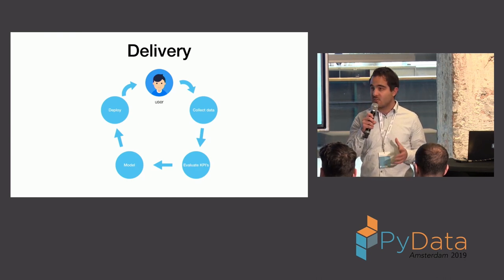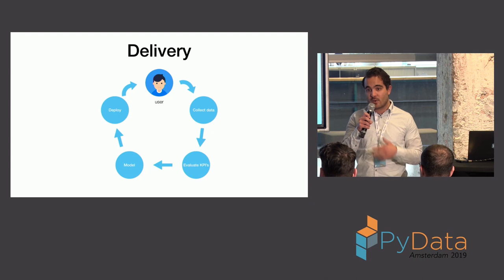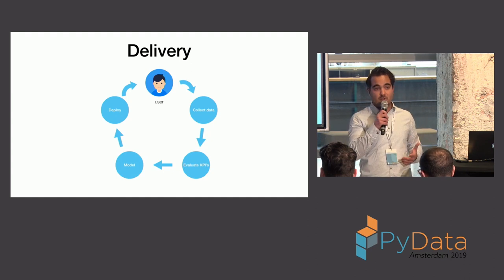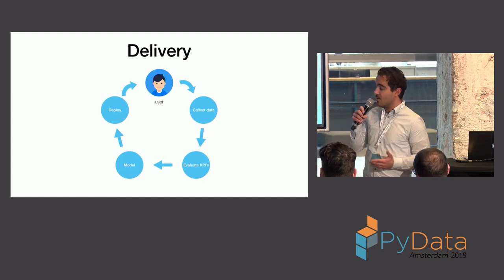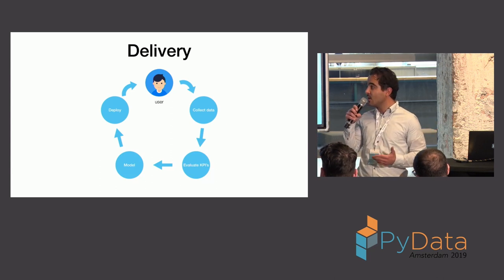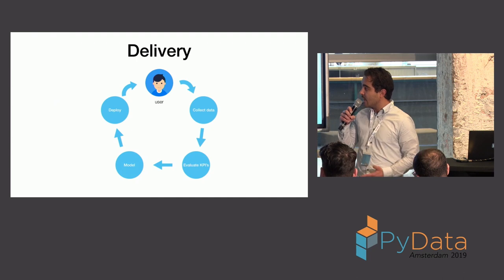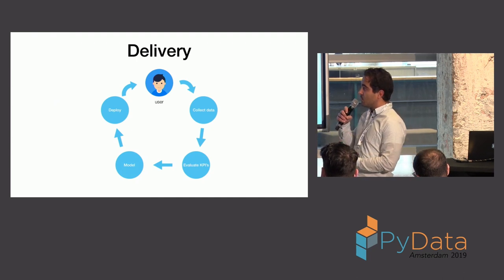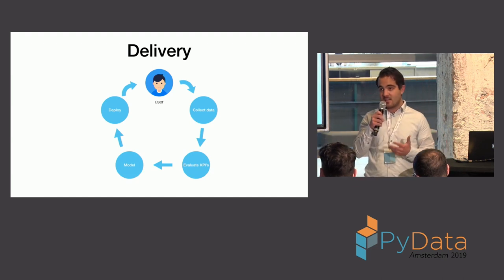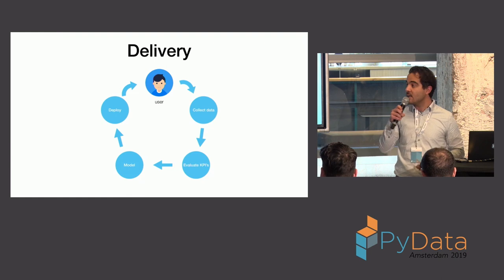So, basically, to frame a little bit what I'm going to talk about is we have basically this, what we call data science loop, where we have a user at the top, where it all starts. And, the user essentially exposes behavior to us that we can collect as data. This data, we can evaluate our KPIs on, such as click-through rate or read-through rate, if we want to know how many articles a user actually ends up reading to the end. And, we use this information, so we use these KPIs and that data to train models.